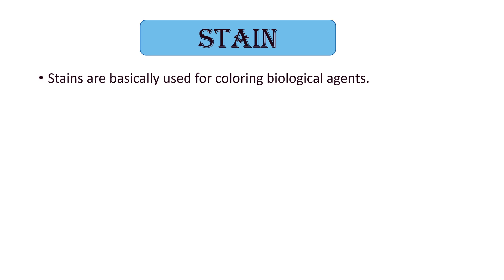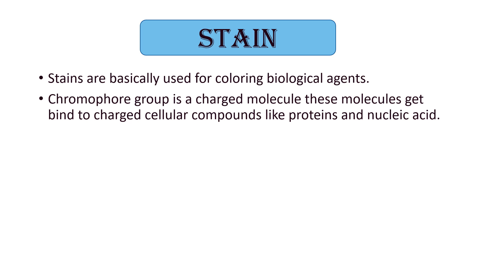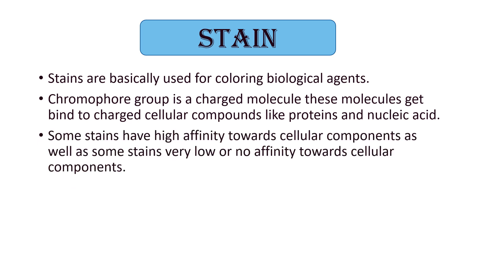Let's study stain in detail. Stains are basically used for coloring biological agents. The chromophore group is a charged molecule. These molecules bind to charged cellular compounds like proteins and nucleic acids. A stain contains both chromophore and oxochrome groups. Cellular components such as proteins and nucleic acids also carry a charge, and when these two charges come together they bind to each other. Some stains have high affinity towards cellular components, while some have very low or no affinity.